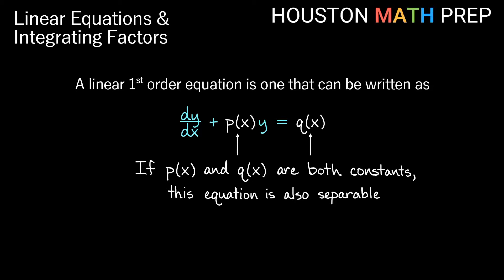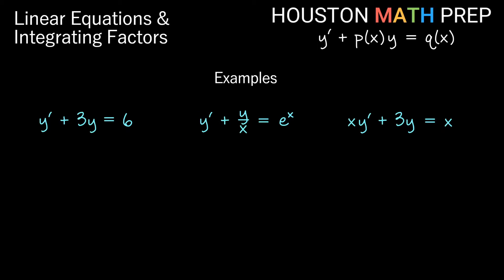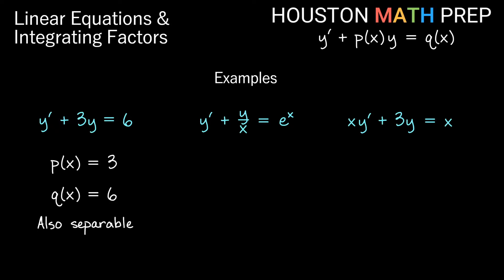In the case where both p and q are constants, this equation is also a separable first order equation — you could use separation of variables. Here are a few examples so you can recognize these when you see them. We have y' plus 3y equals 6, so p(x) is 3 and q(x) is 6, and because both are constants this would also be a separable first order equation.